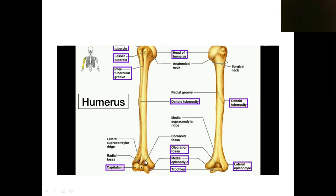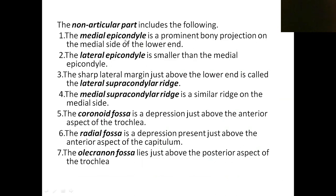Above the trochlea on the anterior aspect is the coronoid fossa, which accommodates the coronoid process of the ulna. Above the capitulum is the radial fossa, for the head of the radius. On the posterior side is the olecranon fossa, for the olecranon process of the ulna.